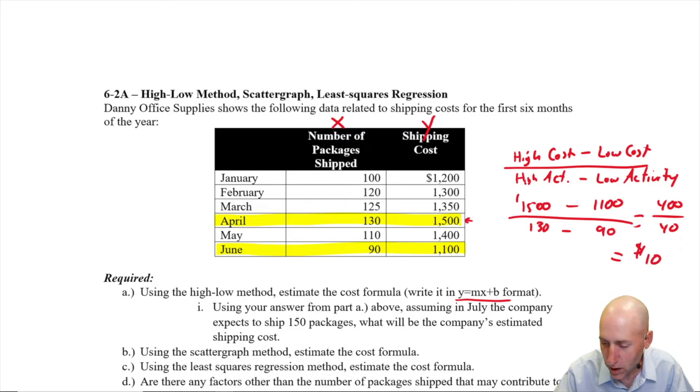And I got to remember, our numerator, of course, was in dollars, and our denominator was in packages shipped. So it's $10 per package shipped, right? Per package shipped.